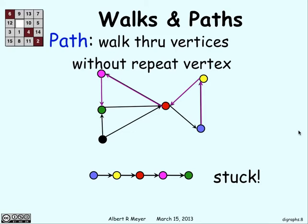If we went to red again, then it wouldn't be a path anymore, not be a valid path. And here, our length is four edges, not five vertices.